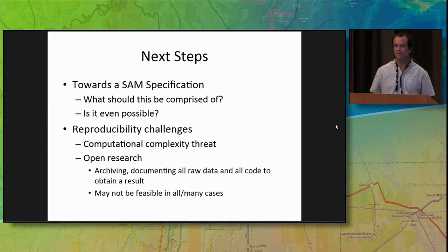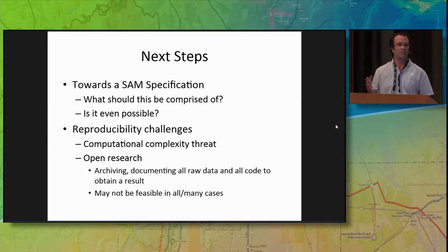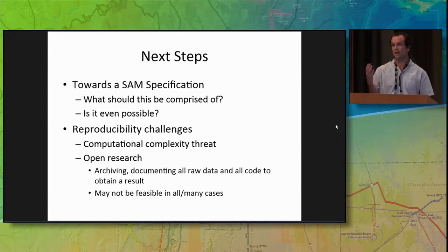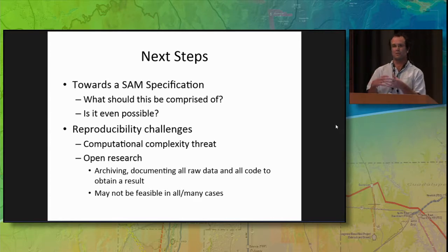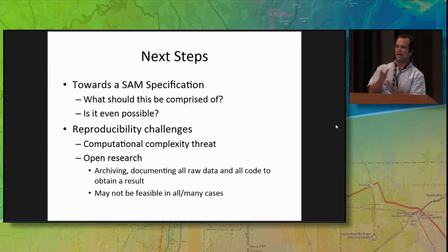More broadly, how far do you go with this? I think geospatial analysis is particularly daunting when you think about when do you stop tracking the provenance, and where do you start in terms of someone working at their desktop doing spatial econometrics. Where does their provenance begin and end, and how do we deal with those issues?